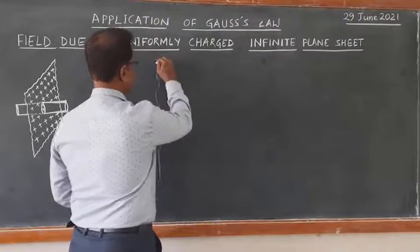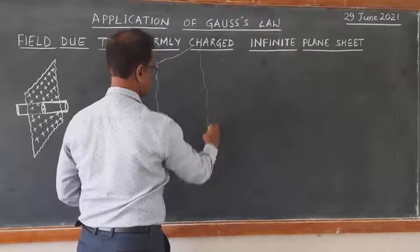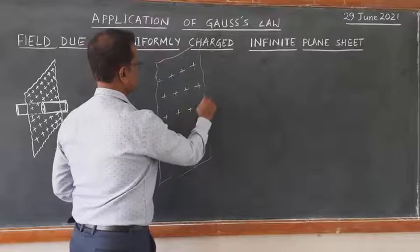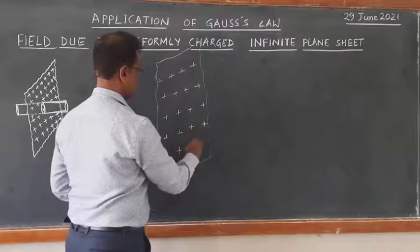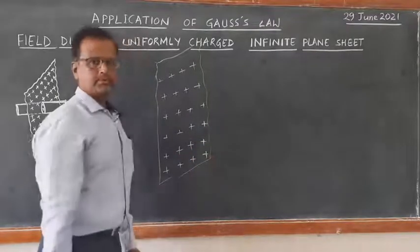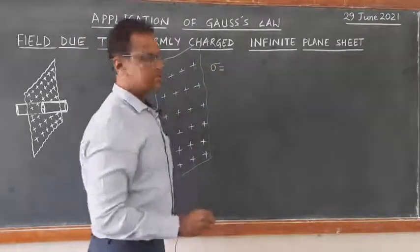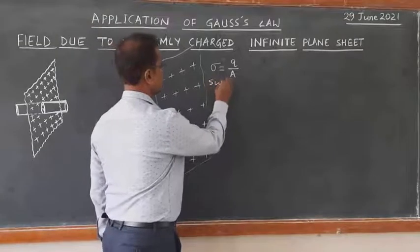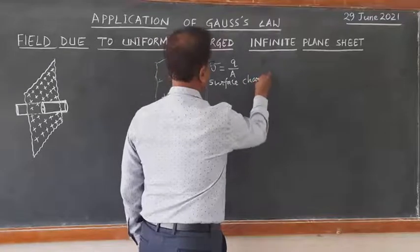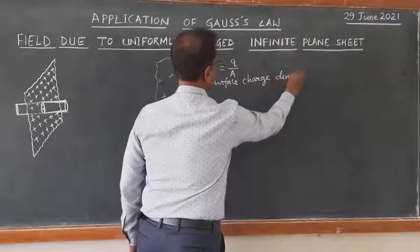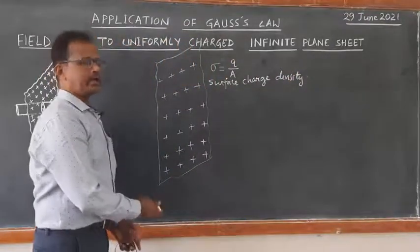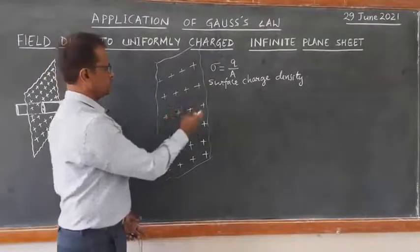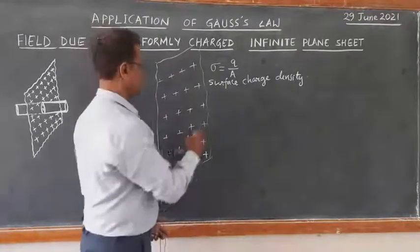Consider an infinite plane sheet of charge — a very huge, infinitely extended plane sheet that is uniformly charged with a positive charge density. The charge density in this case is defined as charge per unit area, and this is called surface charge density, denoted sigma. We want to find the electric field due to this plane sheet at a particular point.